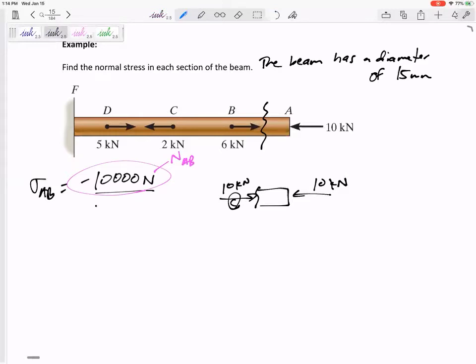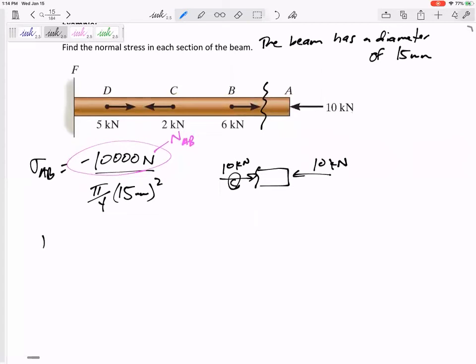I'm going to divide that by pi by 4 diameter squared, right? This is a circle. Anytime you see a diameter, that tells you circular. So the area is a circle, pi r squared or pi by 4 diameter squared. So stress inside section AB is negative 56.59 MPa. Positives and negatives mean compression or tension.